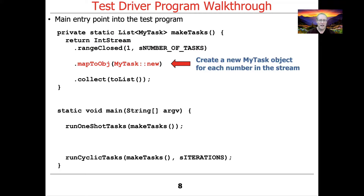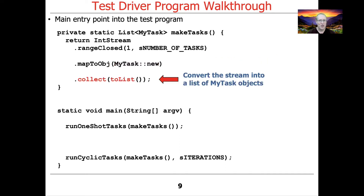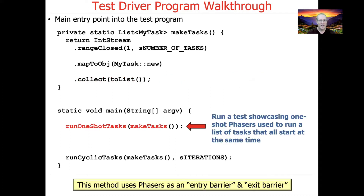Each of those numbers is then converted into a MyTask object by using the MyTask constructor reference, which takes those numbers — say 1 through 10 — and creates MyTask wrappers around each of those numbers. Finally, we use the collect terminal operation to collect that stream of initialized MyTask objects into a list of MyTask objects, which is returned as the return value of the MakeTasks factory method. There are a pair of test methods that demonstrate various features of Java Phaser in both their one-shot and cyclic forms.